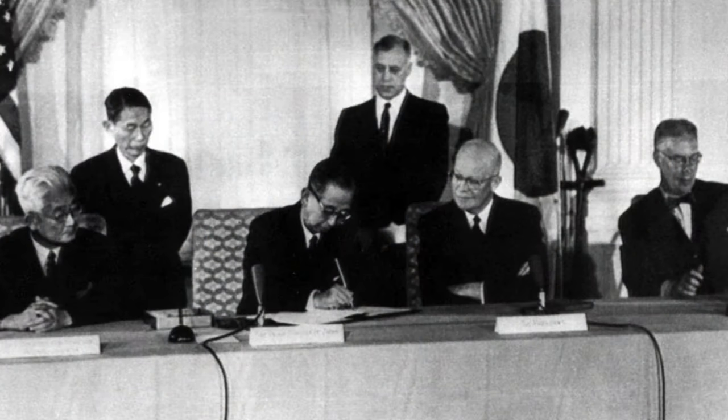To understand how the matter proceeded, you need to know that international law has three key sources. First, international law can be found in treaties, which are agreements between nations. The 1958 Geneva Convention on the Continental Shelf was such a treaty. However, treaties themselves only bind the countries which sign and ratify the treaty — meaning they have signed it and then done whatever domestic steps were needed to commit their country to the treaty.